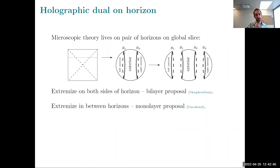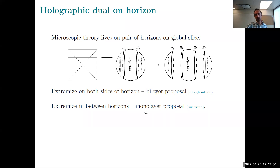Lenny had an independent proposal: if you want to compute entanglement entropy, you extremize only between the horizons — in the exterior region — and don't find extremal surfaces in the interior regions. We call that the monolayer proposal.